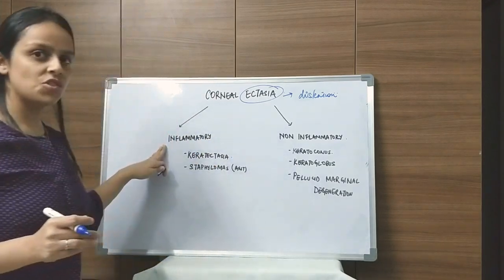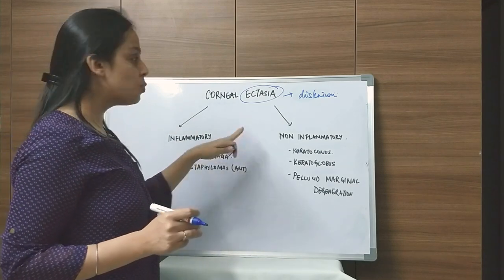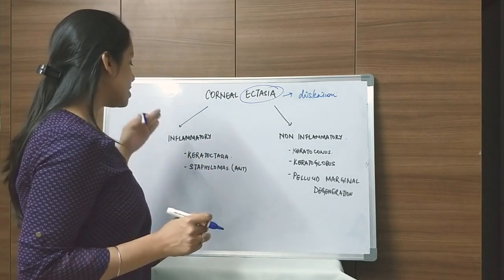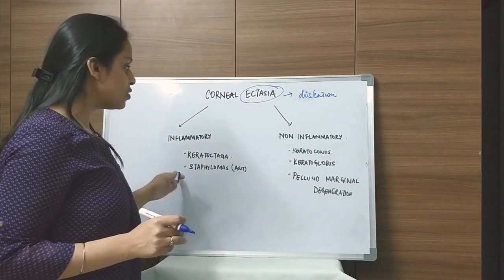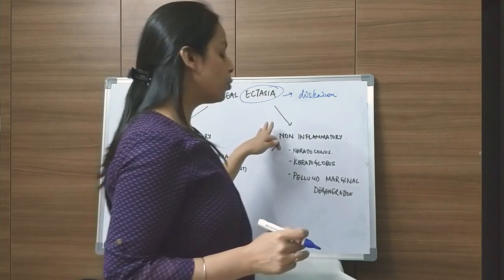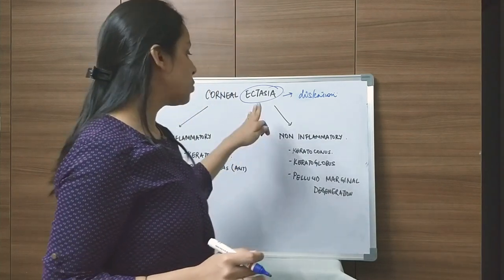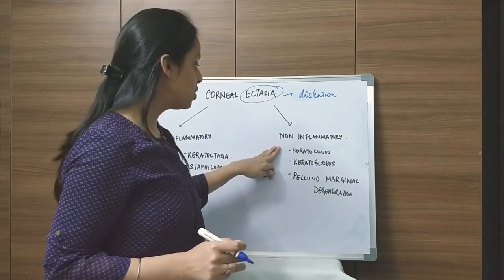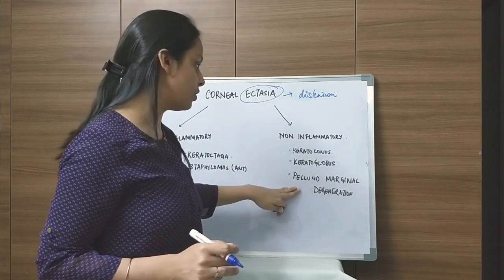Inflammatory, as the word suggests, will be secondary to any inflammation — mostly in corneal ulcers as a complication — where staphylomas and keratectasia are developed. That will be dealt with later. Today I will mainly be focusing upon non-inflammatory ectasias: keratoconus, keratoglobus, and pellucid marginal degeneration.